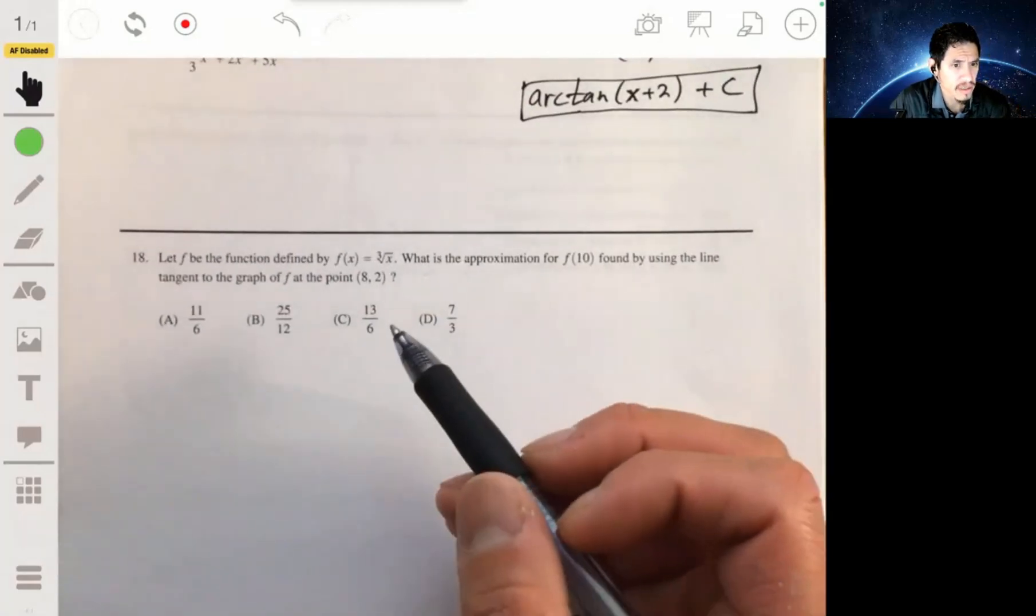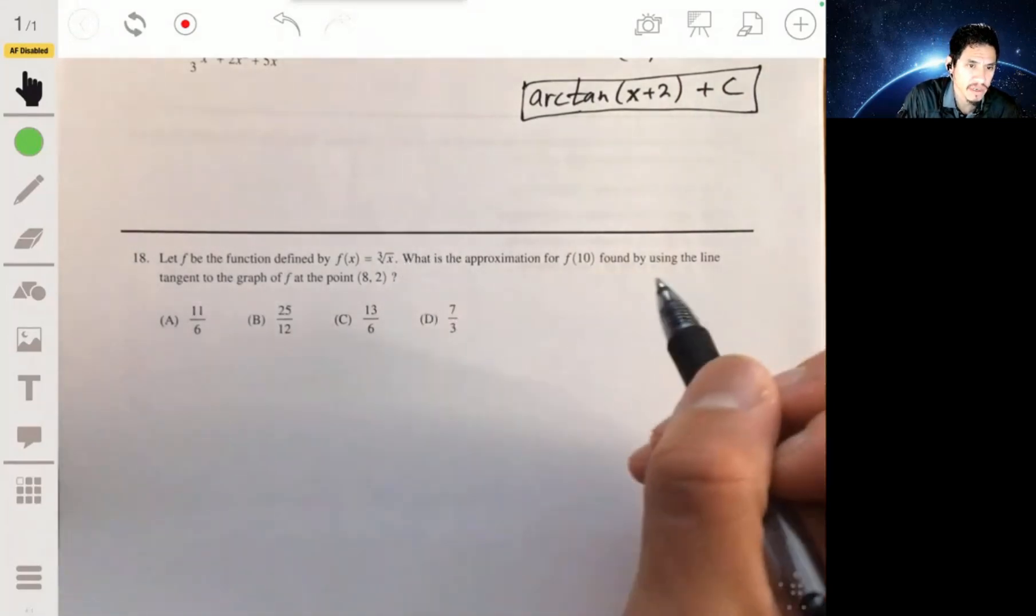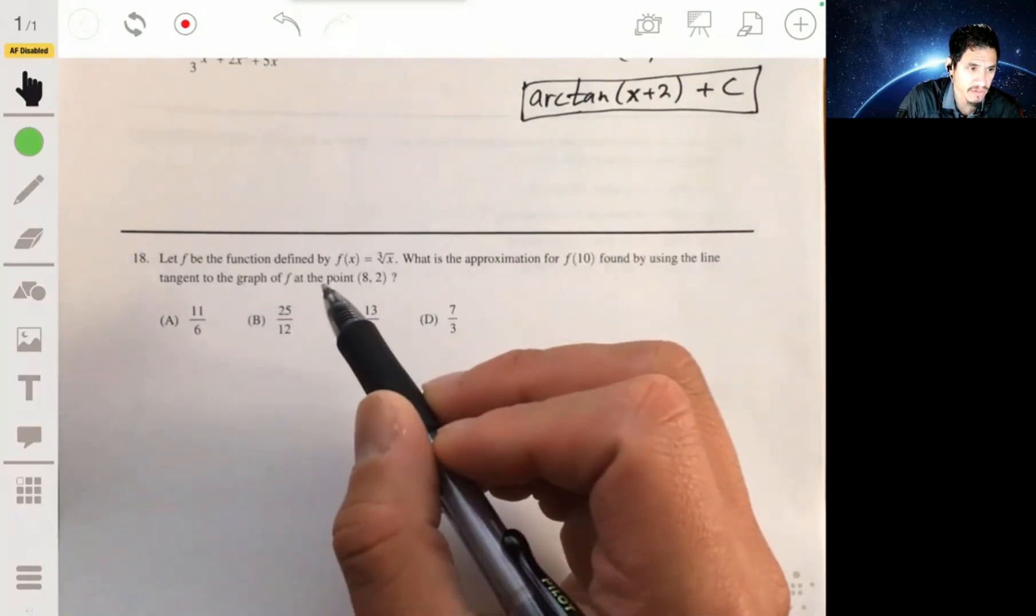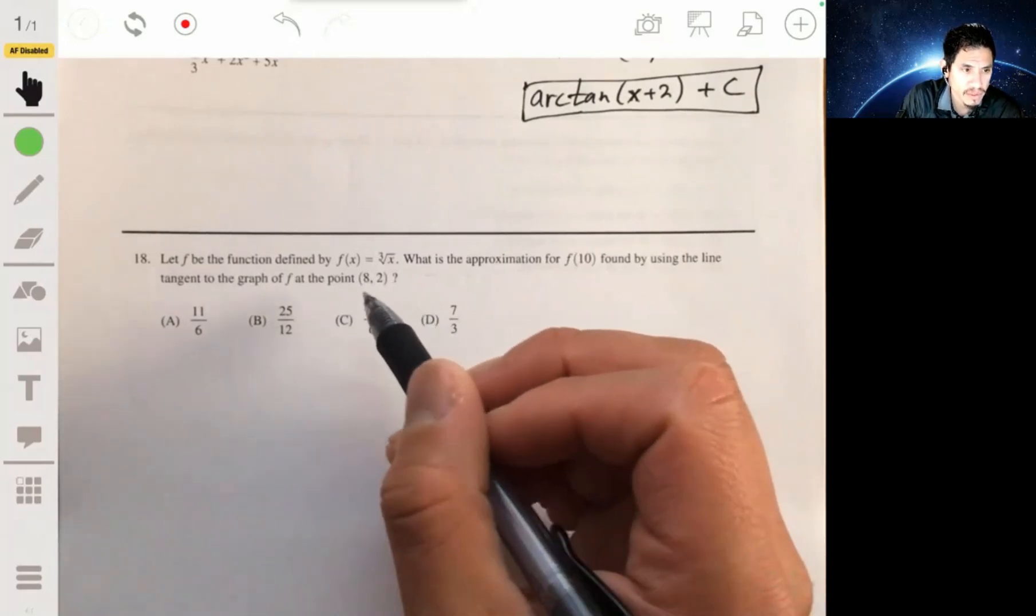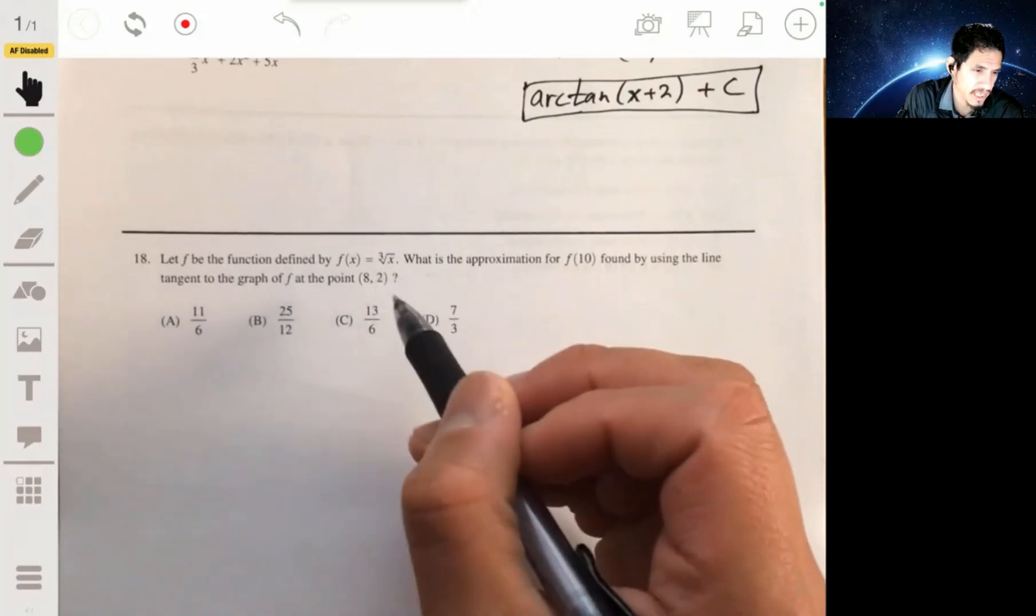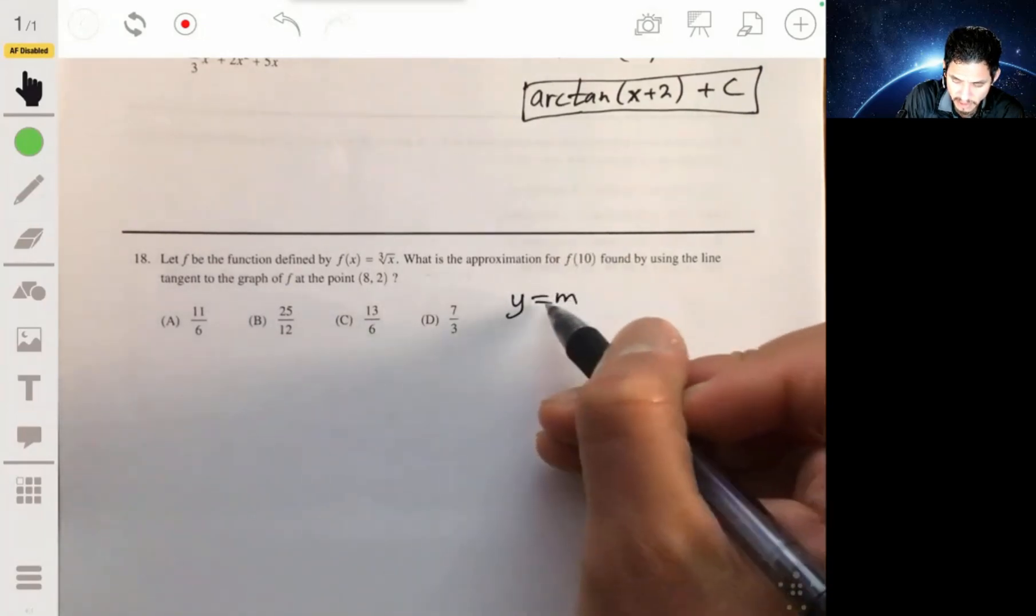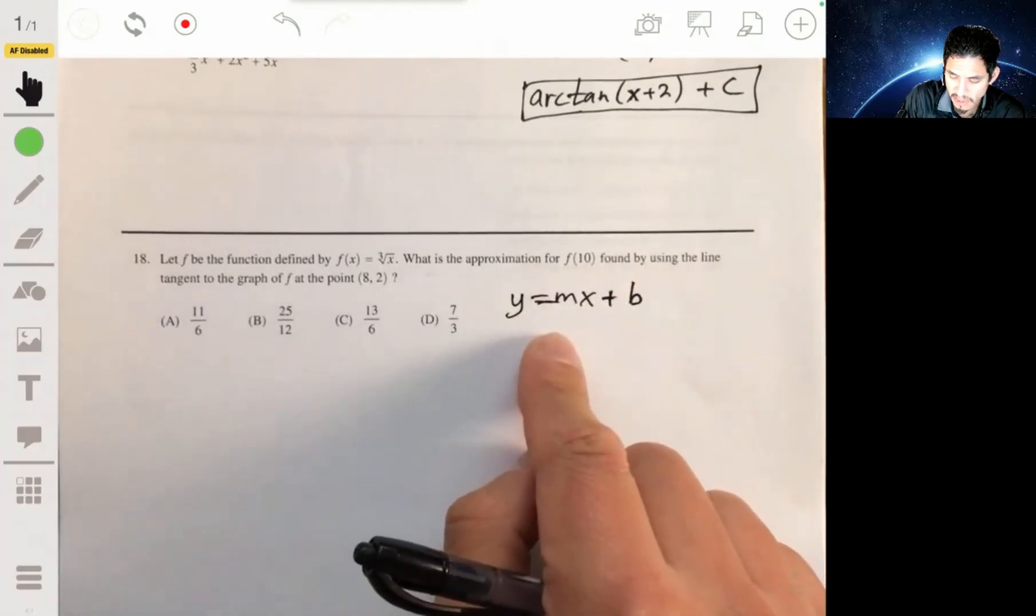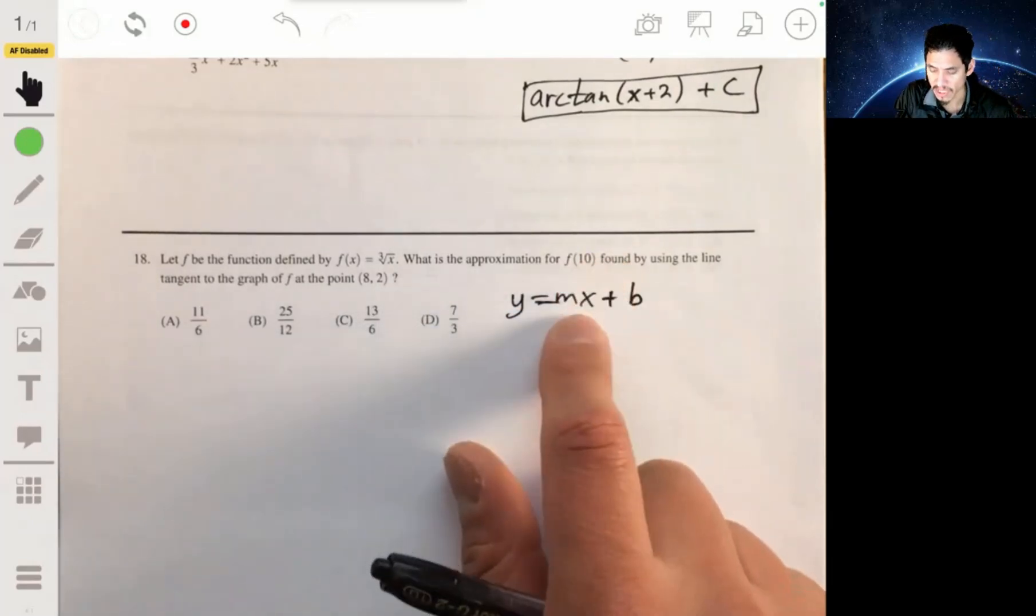Alright, problem 18. We have f as the function defined as the cube root of x. We want to find the approximation for f of 10 found by using the line tangent to the graph of f at the point 8 comma 2. So essentially you want to get an equation for the tangent line. You could use point-slope form. Once you get an equation for the tangent line, just calculate what you would get for y if you plug in 10 into this equation.